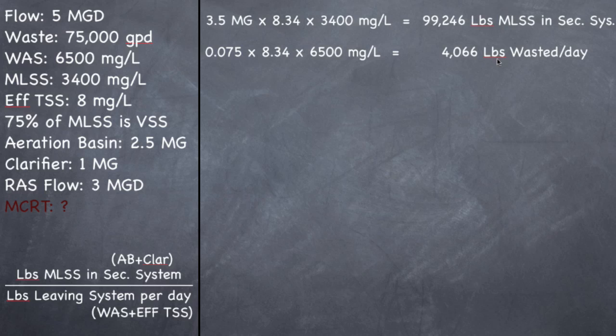So we figured out how many pounds wasted per day, your WAS. Now we need to find out the effluent TSS. So we'll multiply 5 MGD, which is our flow, times 8.34 pounds per gallon times 8 milligrams per liter, which is my effluent TSS concentration. You should get 334 pounds of TSS discharged per day.